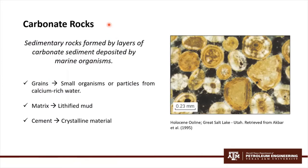Carbonates are sedimentary rocks, forming layers of carbonate sediment deposited by marine organisms such as corals. The typical carbonate rock is made of grains, matrix, and cement. Grains are either skeletal fragments of small organisms, or particles precipitated from calcium-rich water. Matrix is a lithified mud of deposition that fills most of the space not occupied by grains. Cement describes crystalline material that forms in most of the space remaining between grains and matrix.